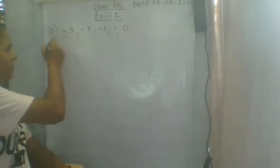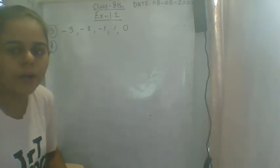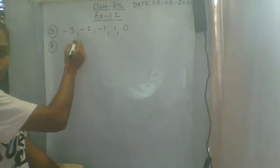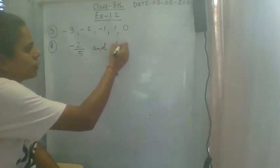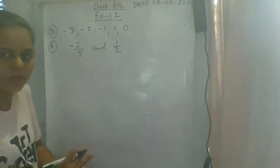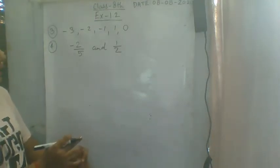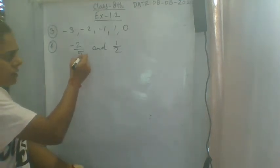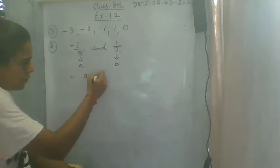Question number 4 is: find 10 rational numbers between minus 2 by 5 and 1 by 2. So let's start question number 4. The rational numbers given are minus 2 by 5 and 1 by 2. We have to find rational numbers between these two rational numbers — specifically 10 rational numbers.